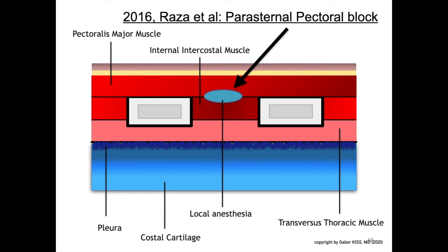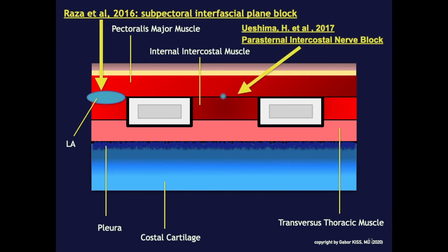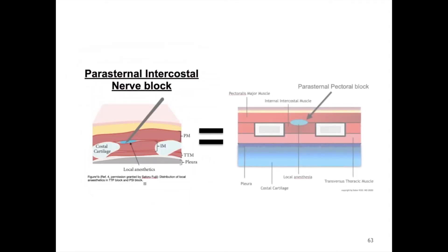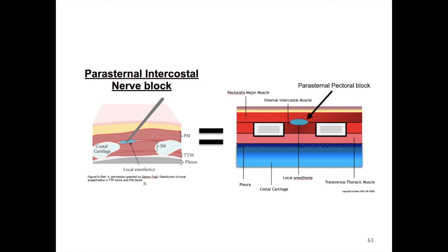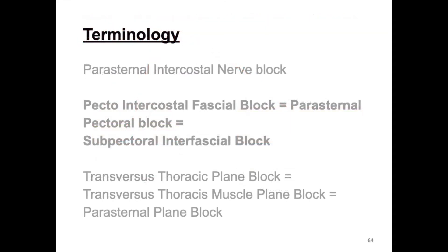In 2016, Razor and co-workers first described the term subpectoral interfascial plane block, also called parasternal pectoral block, for pain management in sternal fractures. However, in 2017, Oshima H and colleagues concluded that the plane for local anesthetic injection is the same for the subpectoral interfascial block as for the parasternal intercostal nerve block. The plane for local anesthetic injection is located between the pectoralis major muscle and the intercostal muscle — the same plane for the subpectoral interfascial block, also called pecto-intercostal fascial block or parasternal pectoral block. This proves that the conclusion of Oshima H and colleagues is correct, namely that the plane for local anesthetic injection is the same for the parasternal intercostal nerve block as for the subpectoral interfascial block.